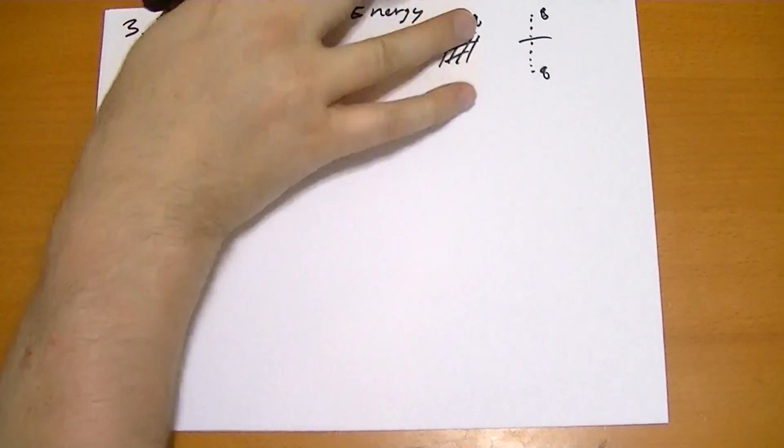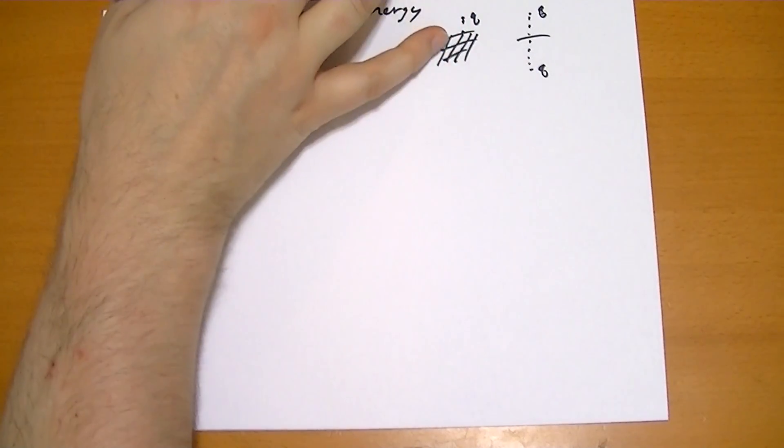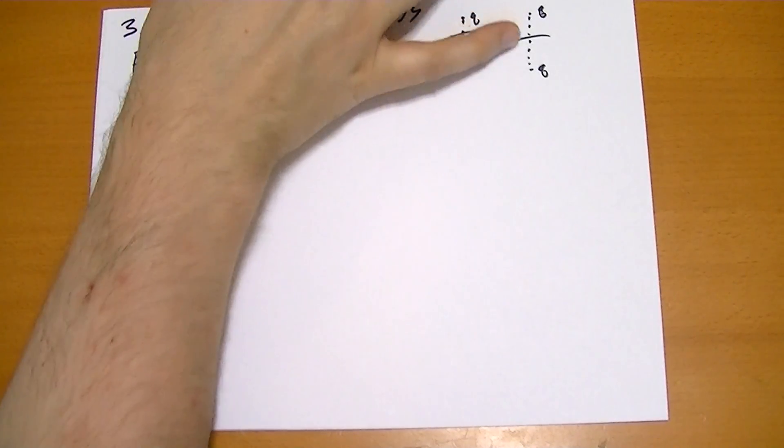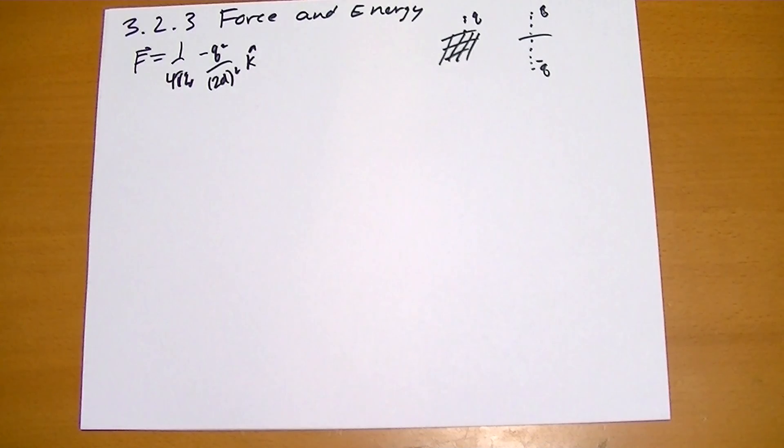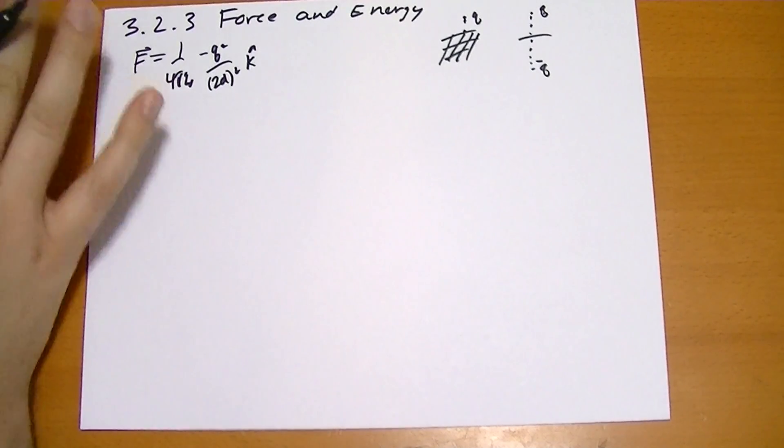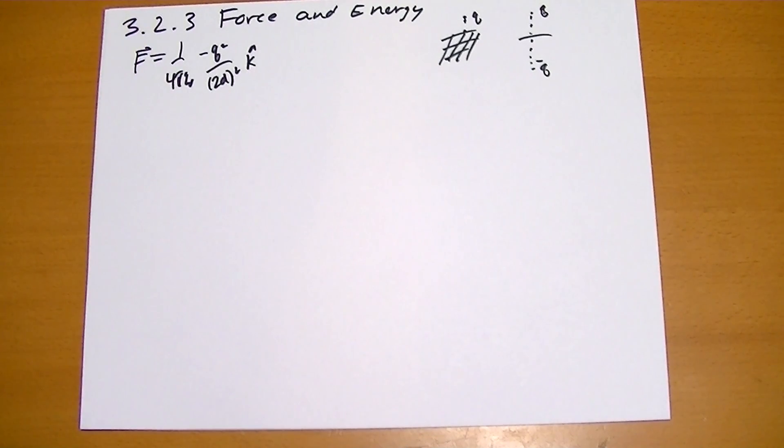So they're attracted to, this point charge is attracted to the plane with the same force and intensity as if there was a negative charge opposite the plane, okay? So for all hints and purposes, to the charge itself, when you're above the plane it looks like you're looking at a mirror image of the charge.